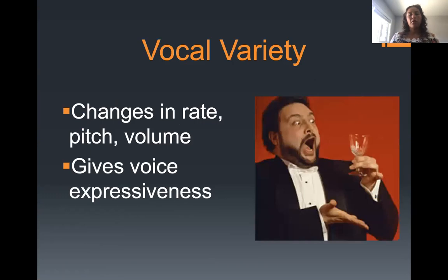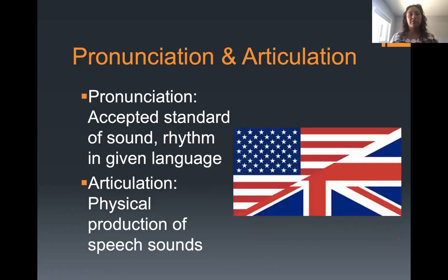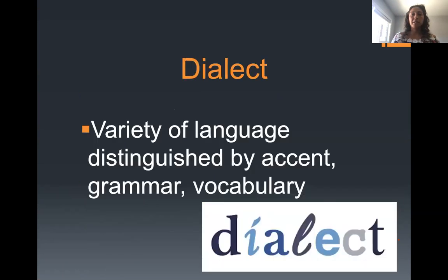Vocal variety is how your voice changes — from up to down — and how different emotions come through in your speech, giving your voice expressiveness. Pronunciation refers to the accepted standard of sound, while articulation is the physical production of speech sounds.